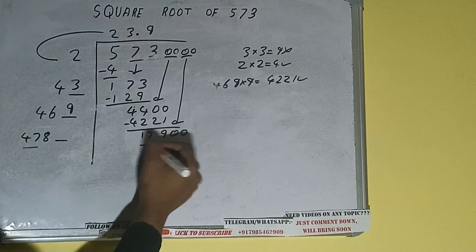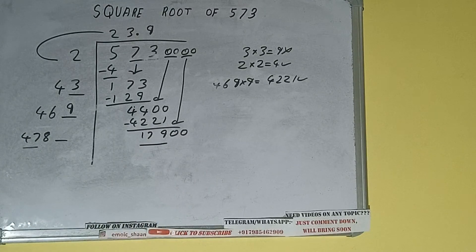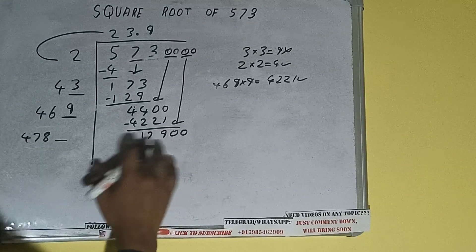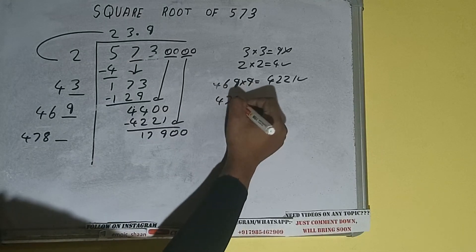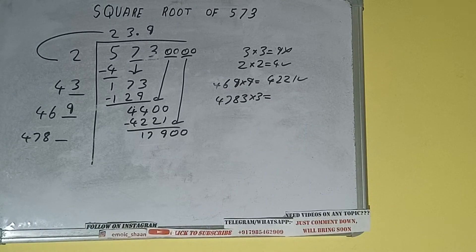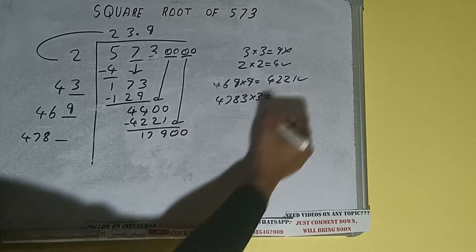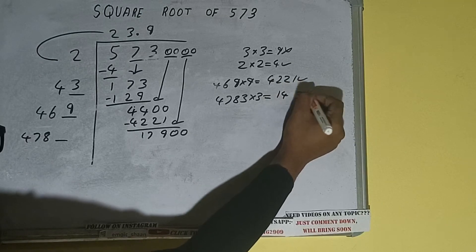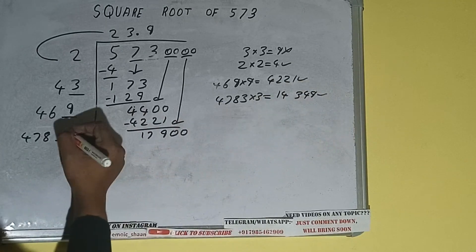Compare this 47 and 179. So 47 times 3 is 141, so we can try 3. 4783 into 3 we can try.